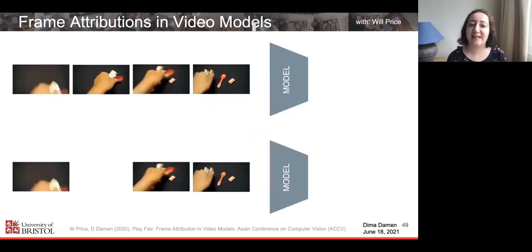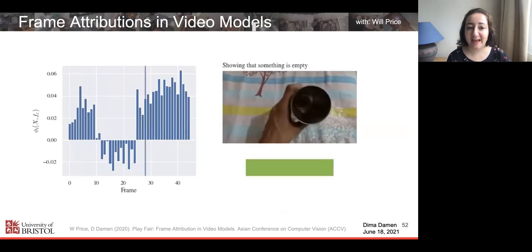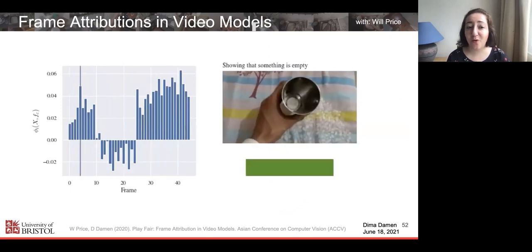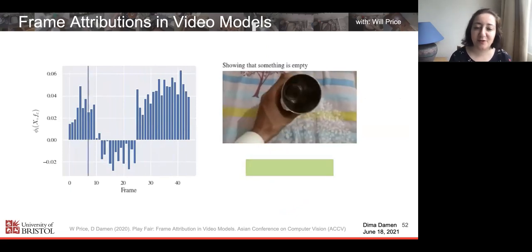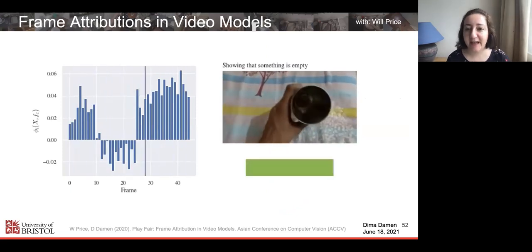You can also note that some frames actually contribute negatively to the model's response. Actually, not having that frame in the video can improve the performance of the model in the sense it can make the model more correct for a certain class, because that frame might be either ambiguous or more relevant to other classes in the dataset. Our work is enabling you to get this understanding of all frames and attribute the frame's response to a particular class, including negative ones.